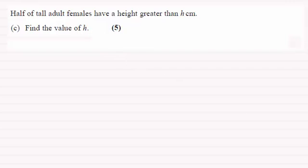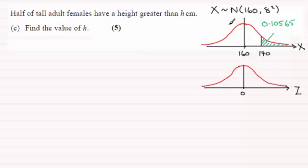And so what I do for this is go back to sketching our diagrams for the normal distribution for the random variable X. And we know that it's got a mean of 160 and a standard deviation of 8, so the variance is 8 squared. Now in an earlier part we knew that the probability of being more than 170 centimeters, which was for someone being tall, we worked out to be 0.10565.